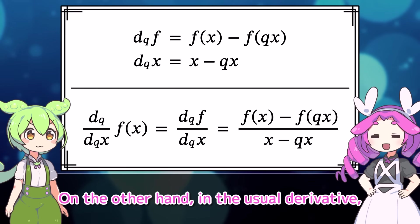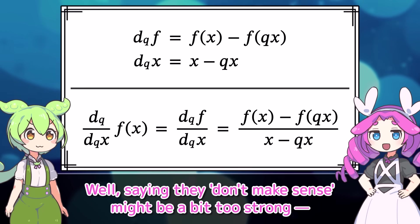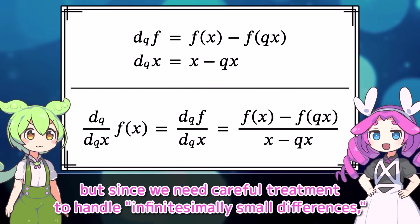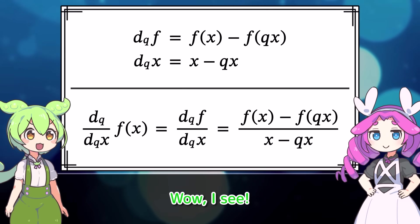So, when it comes to the q-derivative, the numerator and denominator can be defined separately, because they are treated as just differences. On the other hand, in the usual derivative, we've learned that the numerator and denominator don't make sense on their own. Well, saying they don't make sense might be a bit too strong. But, since we need careful treatment to handle infinitesimally small differences, it's certainly not as simple as this.